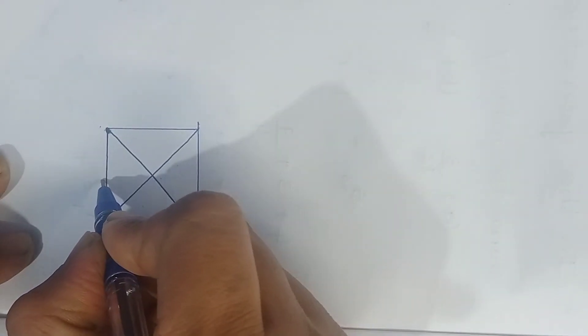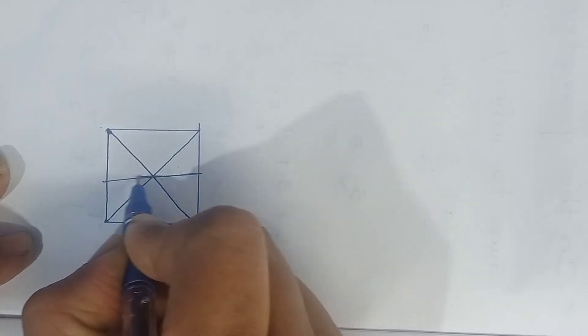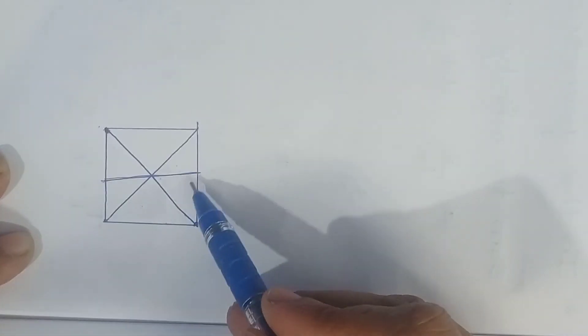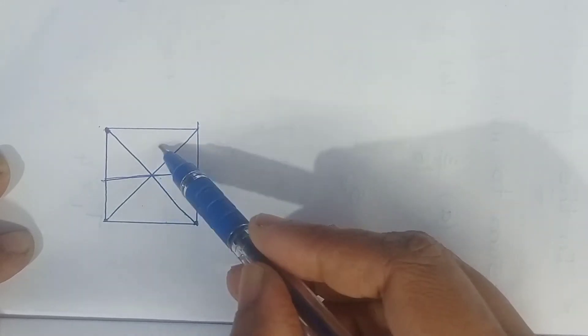Now if you draw a line like this, then this line divides the square into two equal halves.